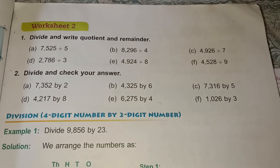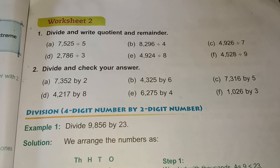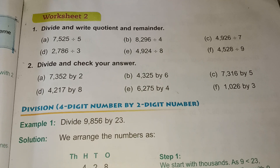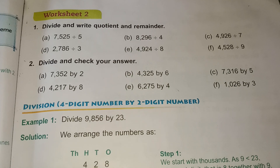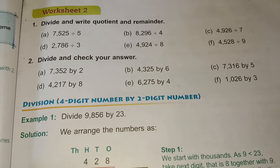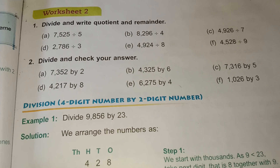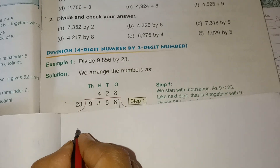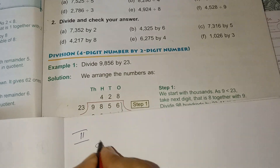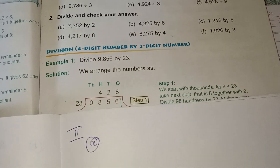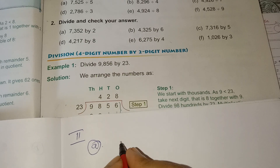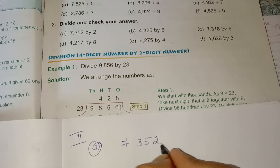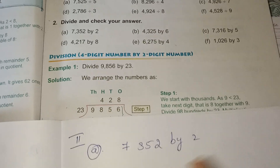The remaining problems, do by yourself. Next, divide and check your answer as we did in the last worksheet — same method. We have to divide and check the answer. Second section, first one: 7352 divided by 2.